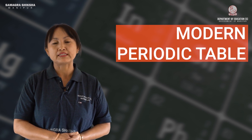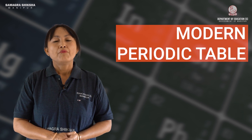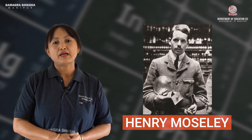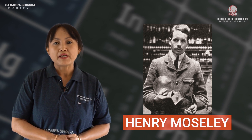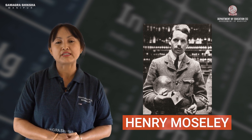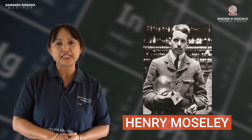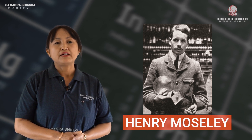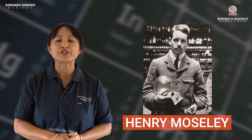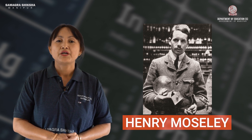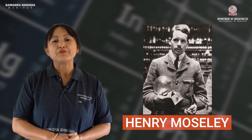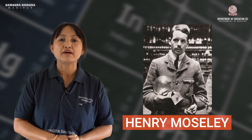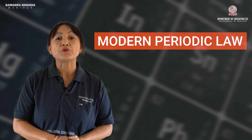The Modern Periodic Table — the Russian scientist Henry Moseley established that atomic number, not atomic mass, is the fundamental property of elements. Elements are arranged in increasing order of atomic number, and the properties of elements repeat at regular intervals — this is called periodicity. Based on this, Henry Moseley formulated the modern periodic law.